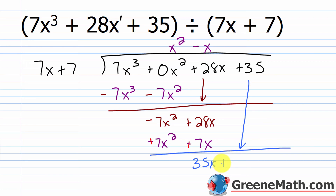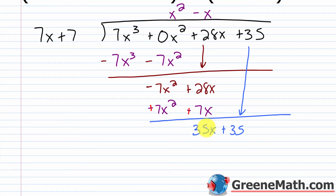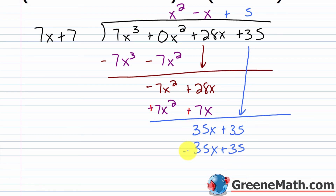Bring down this plus 35. Then 7x goes into 35x five times: 35 divided by 7 is 5, and x over x is 1. So plus 5 up top. 5 times 7x is 35x; 5 times 7 is 35. Subtracting 35x plus 35 from that gives 0 — they cancel completely. So there's no remainder. We get x squared minus x plus 5.